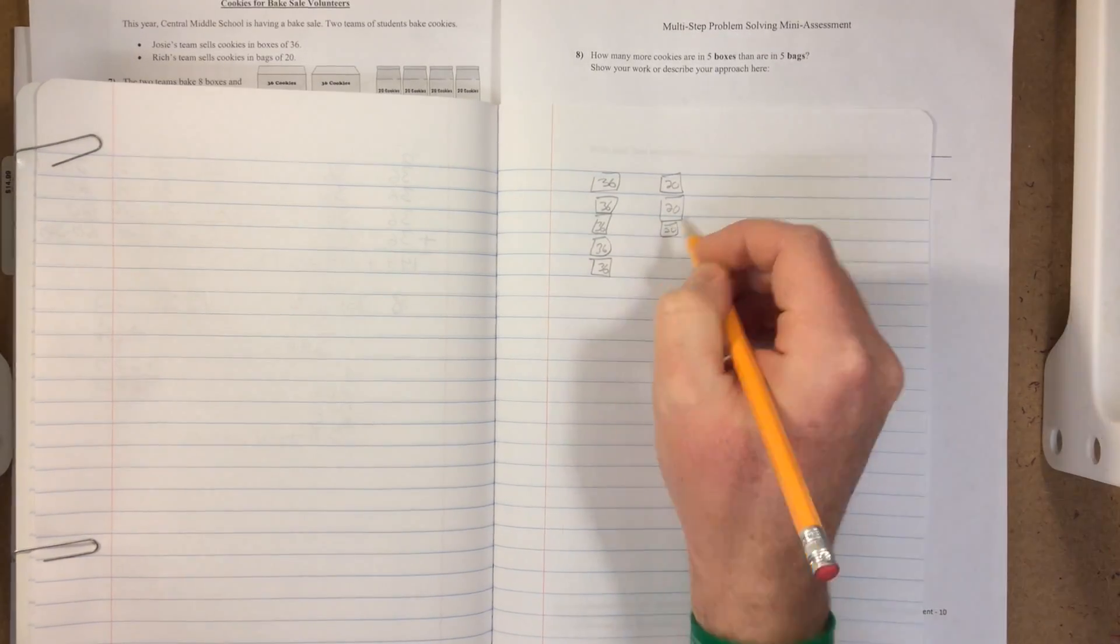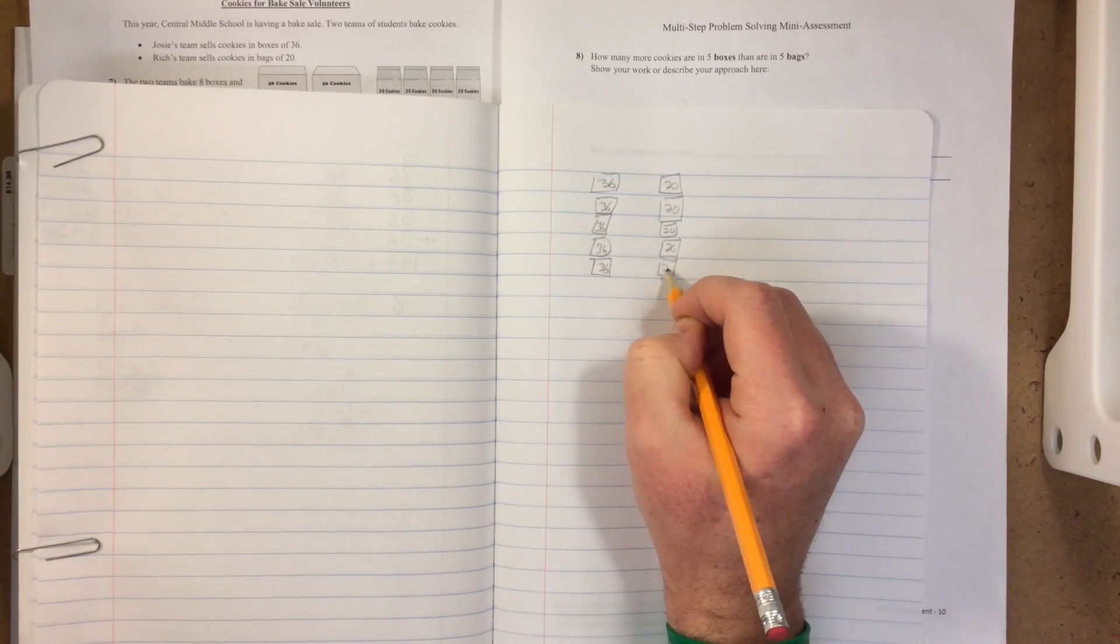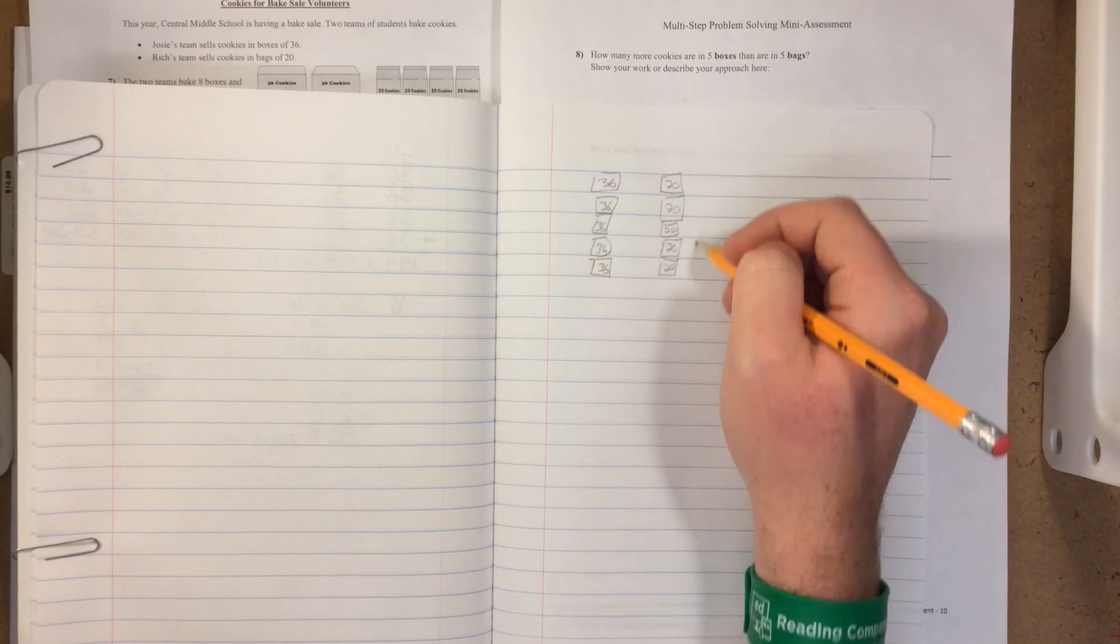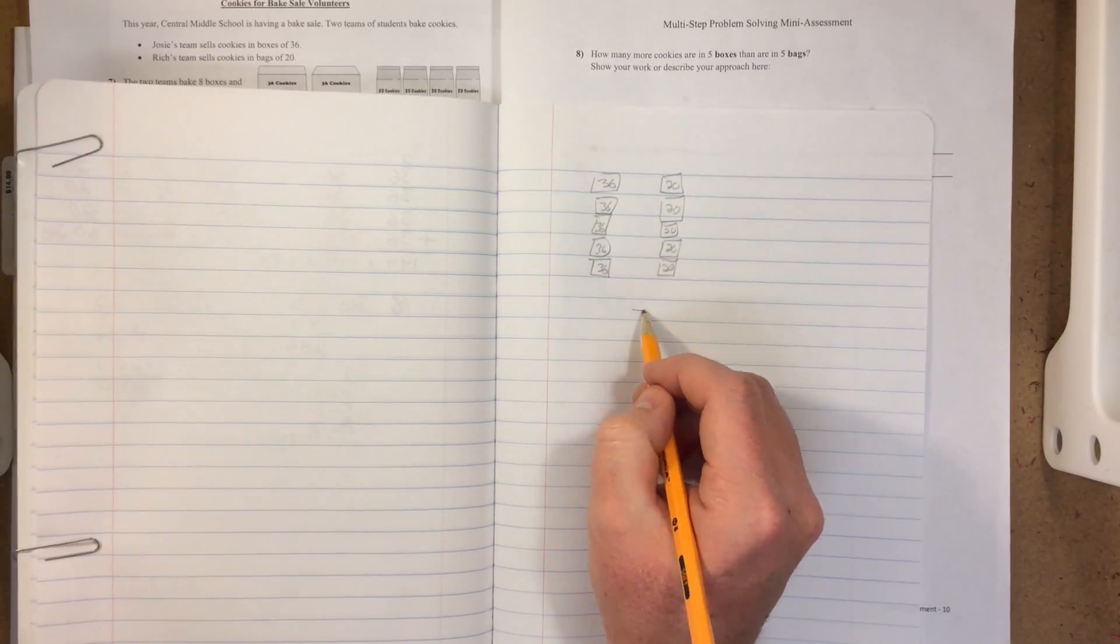What we're going to do is add all 36 and then subtract all 20. So we will find the total here, the total here, and then subtract those totals.